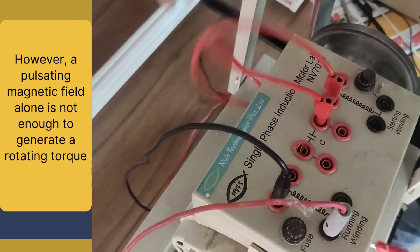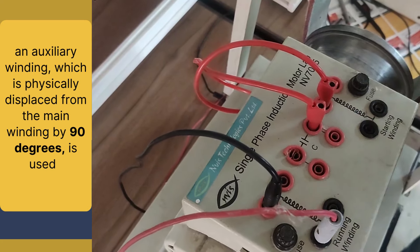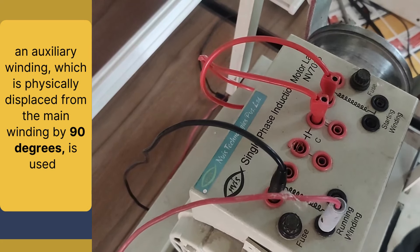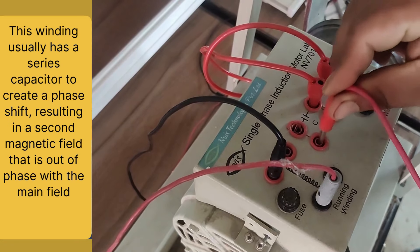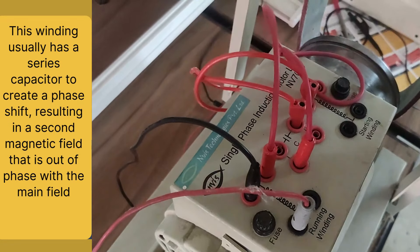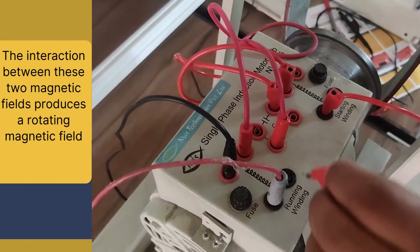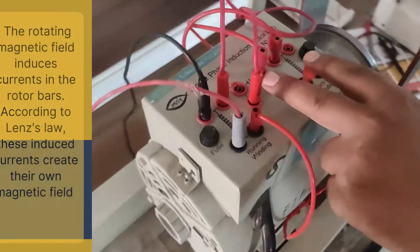So to overcome this problem, an auxiliary winding which is physically displaced from the main winding by 90 degrees is used. This winding usually has a series capacitor to create a phase shift, resulting in a second magnetic field that is out of phase with the main field. The interaction between these two magnetic fields produces a rotating magnetic field.